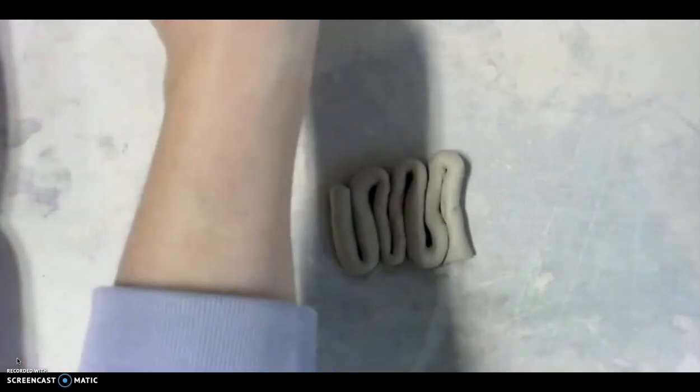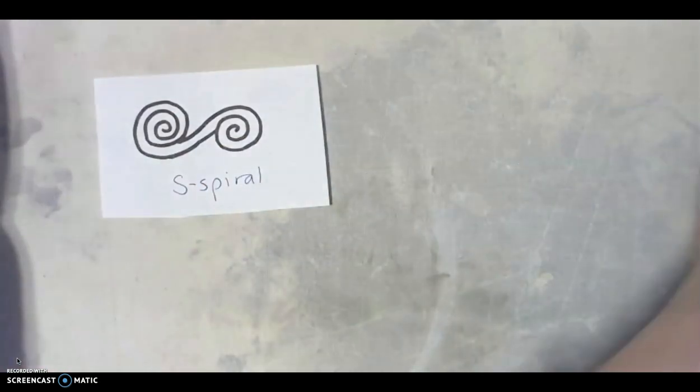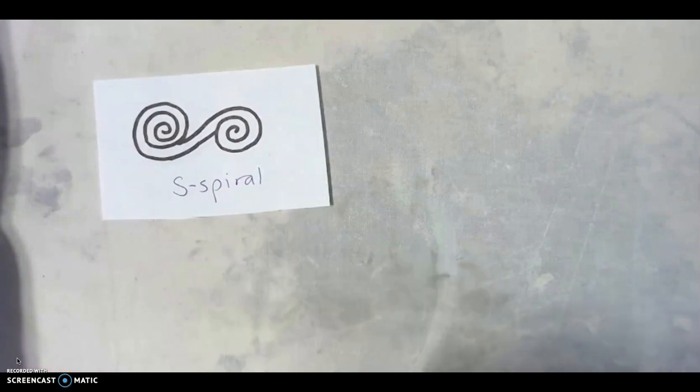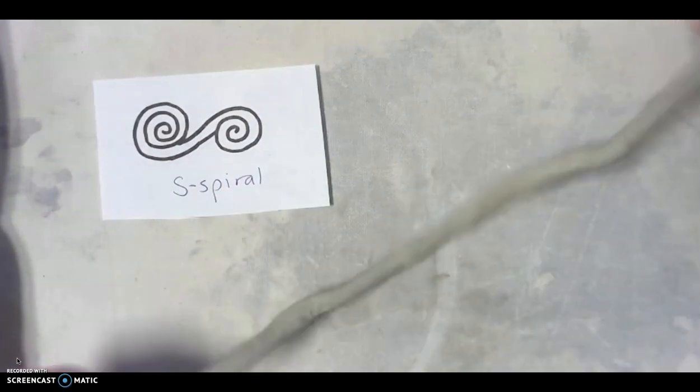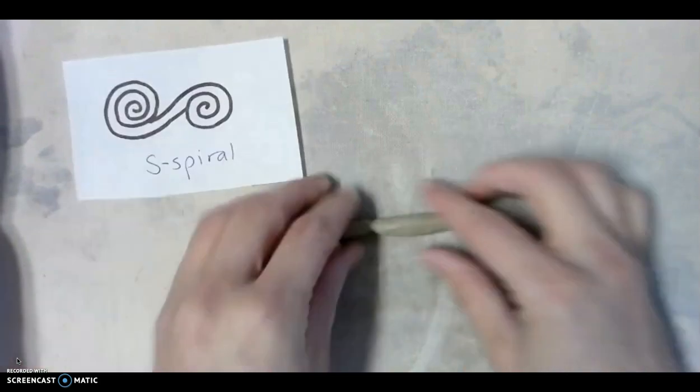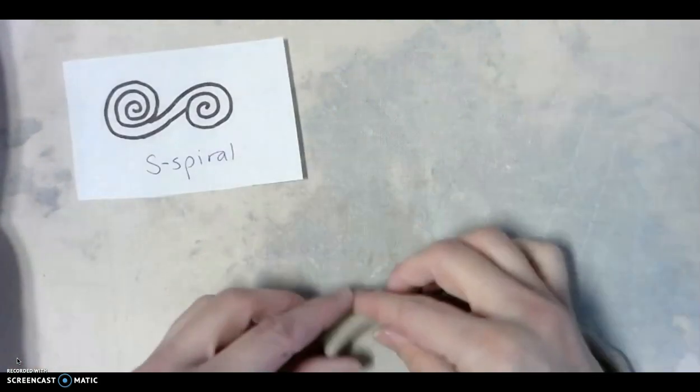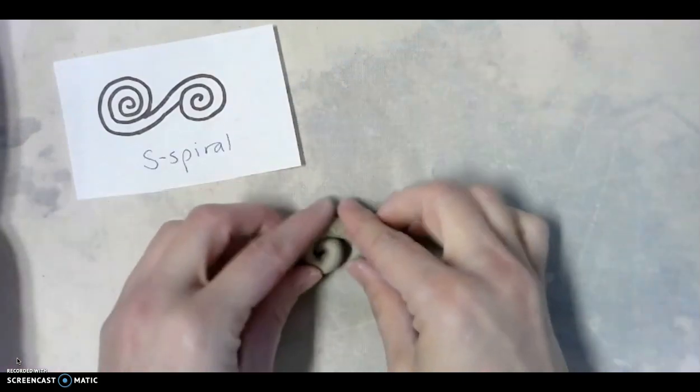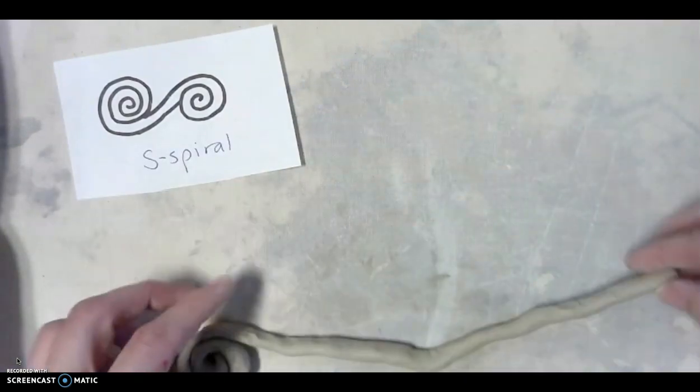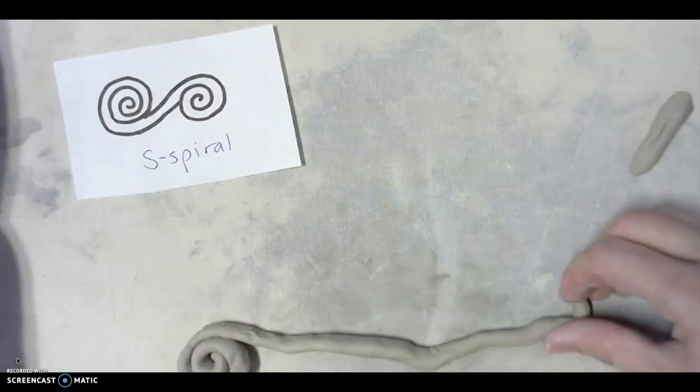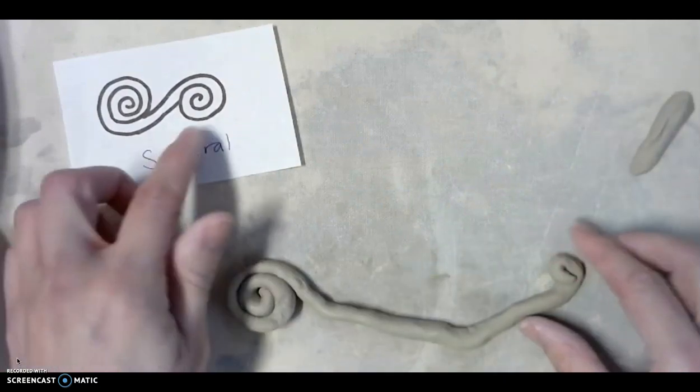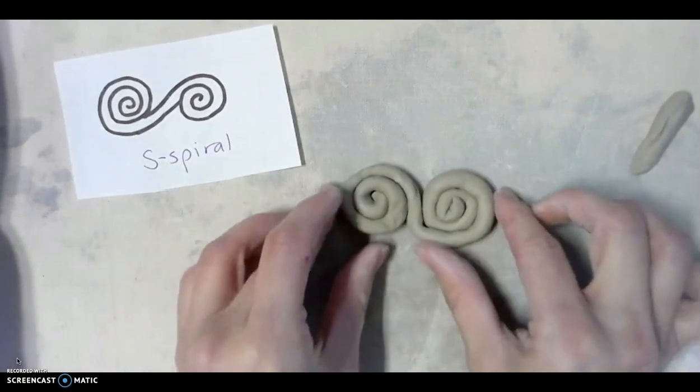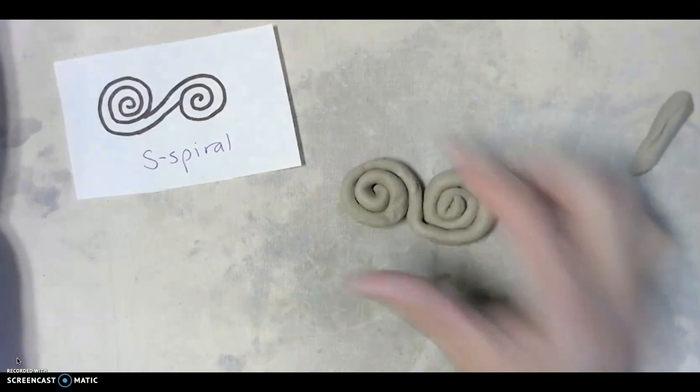Now the next one is called an S spiral. So this is a spiral where it goes one direction and then it switches and goes another direction. So we're going to actually just use this clay I just used for that folded coil. And so it doesn't matter which way you start for your spiral, but you do need a significant length of coil. And so then at some point, I'm going to twist it around and go a different direction. Now it can be tricky to make one that's perfectly symmetrical on both sides. You can see the side's a little bit bigger. But there you go. That is an S spiral.